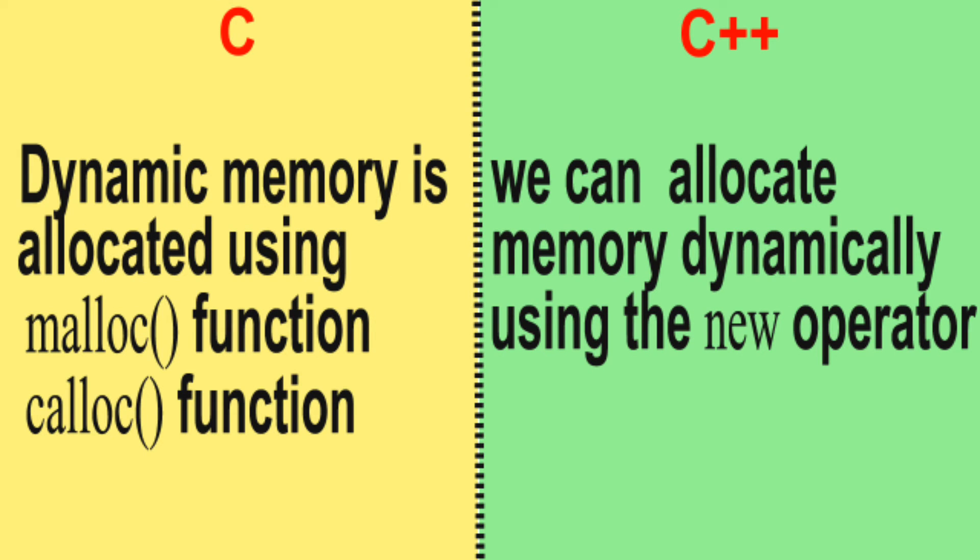Difference number 9: In C, dynamic memory is allocated using malloc function or calloc function. The malloc function allocates a single block of requested memory. Calloc function allocates multiple blocks of requested memory. In C++, we can allocate memory dynamically using the new operator.